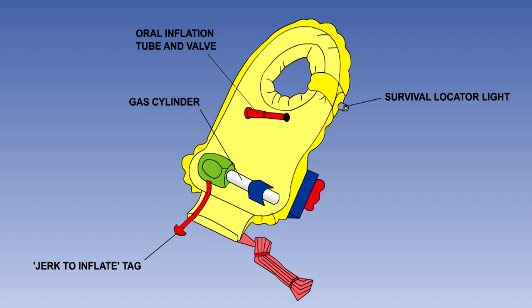The survival locator light is usually powered by a saltwater-activated battery, the operation of which is automatic when it is immersed in saltwater. As well as the light, a life jacket will usually also have a whistle attached to it for attracting attention and a lifeline to enable survivors to tie themselves together.